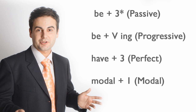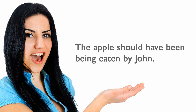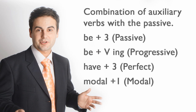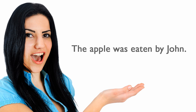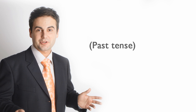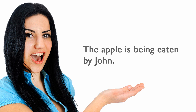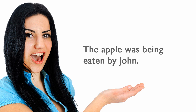The apple is eaten by John. (Simple present passive.) The apple was eaten by John. (Simple past passive.) The apple is being eaten by John. (Present progressive passive.) The apple was being eaten by John. (Past progressive passive.)